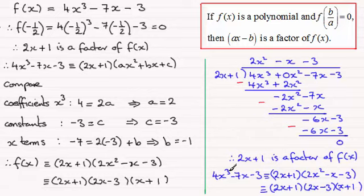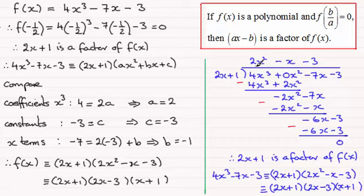So those are two different approaches to this particular problem. If I were given this question, I'd prefer the algebraic long division method, because it asks us to go on and factorize f(x) — as I was doing the division I proved it was a factor, but I'd also done half the work by getting the quadratic factor at the same time. But I leave it up to you to decide.